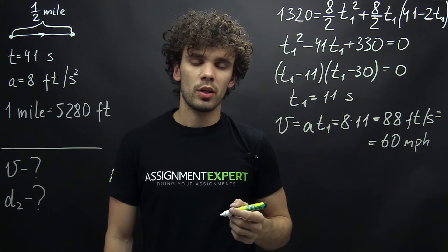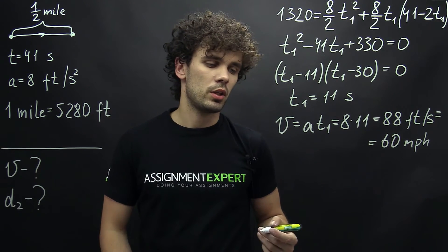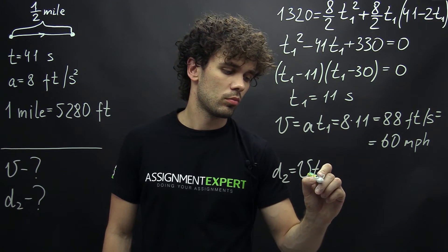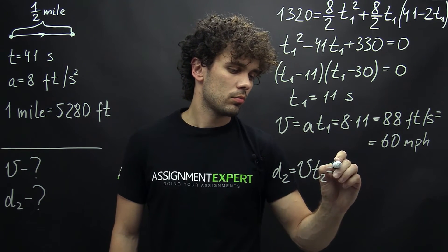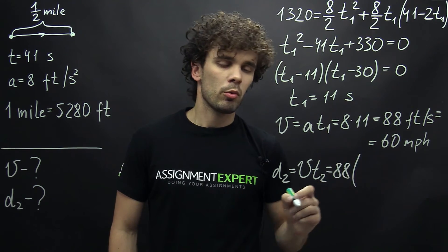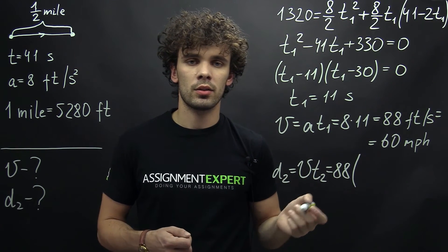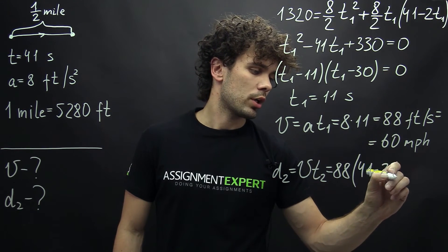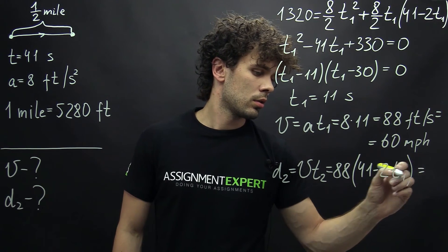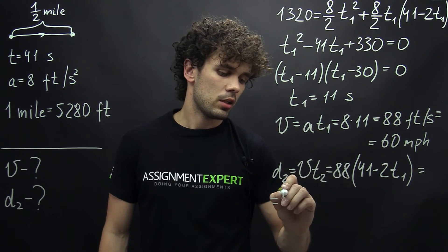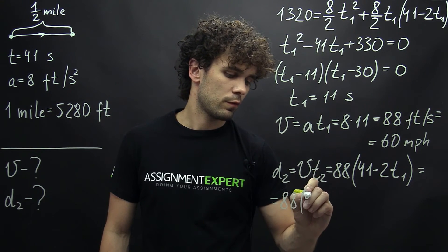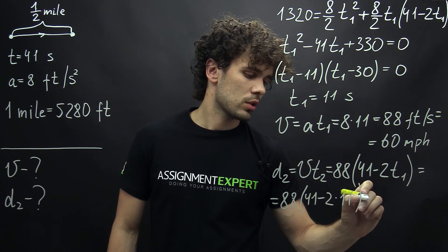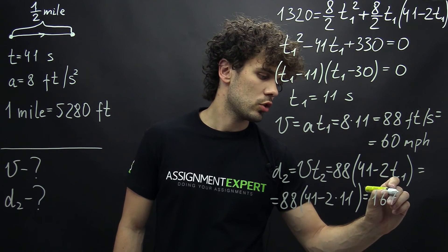Now, knowing the max speed, we can find the distance that the train covers at that speed using the equation D2 equals V times T2. This will be 88, and we use the equation for the time from the first part: T2 equals 41 minus 2T1. So this gives us 88 times 41 minus 2 times 11, and this gives us 1,672 feet.